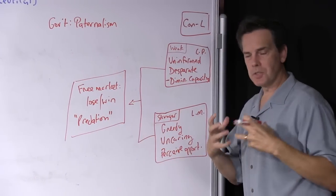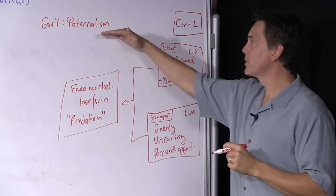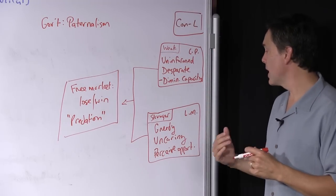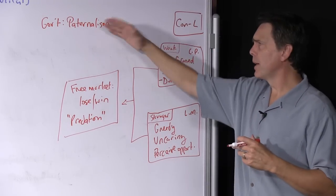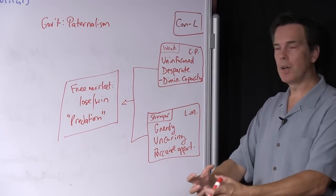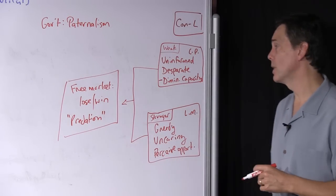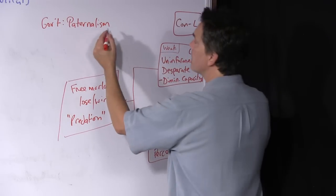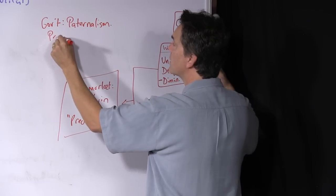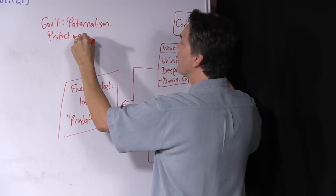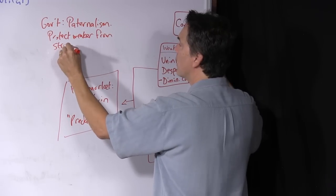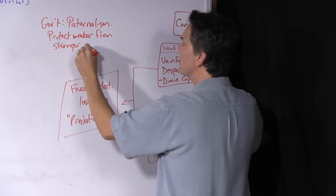The government needs to intervene to override the free market on paternalistic grounds that just as in the case, for example, of a father, right, or a mother, right, who will step in to protect their child from a bully, right, who is taking advantage of him or her. And so one element of paternalism that's operative here is to protect the weaker parties, in this case the cancer patient, right, from the stronger because we think that left to their left alone, that's what's going to happen.